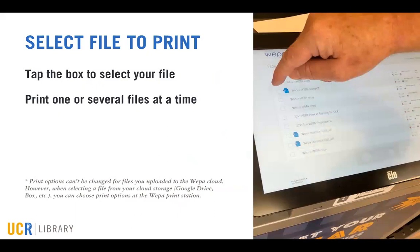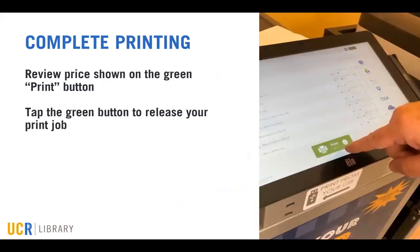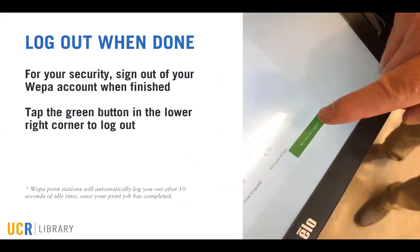On the left side of the screen, you'll see the list of files you've uploaded to your WEPA account. Documents uploaded to WEPA will be available to print for up to six days. Tap the box next to the document you want to print, or tap the box at the very top of the list to select all files. The green button at the bottom of the screen will display the total price for your print jobs — tap this button to continue. For your security, be sure to log out of your WEPA account when you finish printing; the green logout button will appear in the lower right corner. The kiosk will also automatically log you out after 10 seconds of idle time after your last print job has completed.